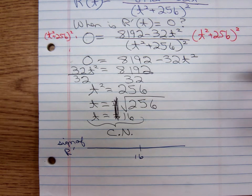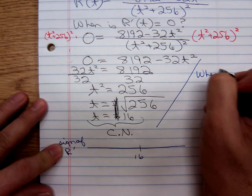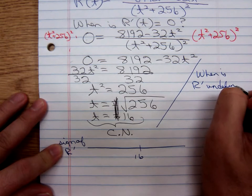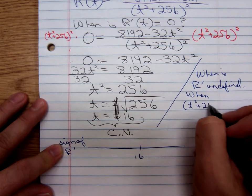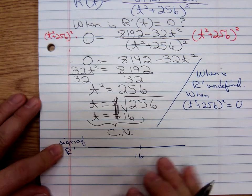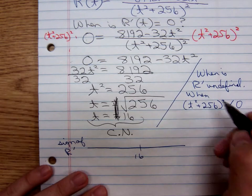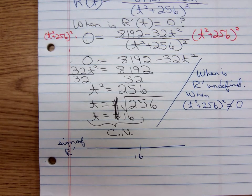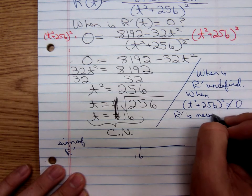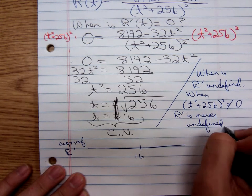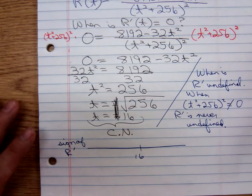Maybe I should write that out for you. When is R' undefined? When the denominator t² + 256 quantity squared equals zero. And that denominator is never equal to zero. It never equals zero. So where is it undefined? R' is never undefined. I don't like saying that—that's two, what is it, two double, it's a double negative. Never undefined. So R' is always defined. I like saying it like that better.